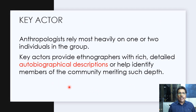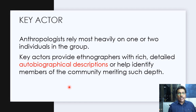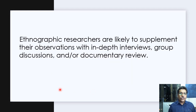The researcher often has to rely on one or two key individuals in the group being studied. These people are known as key actors. Key actors provide ethnographers with rich, detailed autobiographical descriptions of themselves and also help identify members of the community. They are extremely important in the research process and ethnographers have to keep a close eye on who could be key actors in that particular group. Ethnographic researchers are also likely to supplement their observations with in-depth interviews, group discussions, and documentary review.